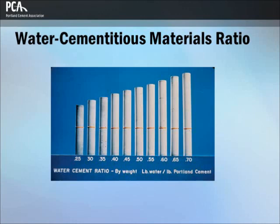Ten cement paste cylinders are shown with water-cement ratios ranging from 0.25 to 0.70. The band indicates that each cylinder contains the same amount of cement. Increased water dilutes the effect of the cement paste, increasing volume, reducing density, and lowering strength.